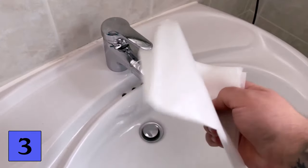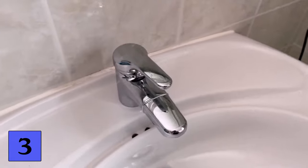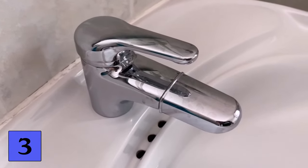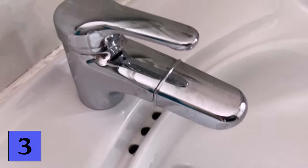This brings us to trick number 3, for which you need an ordinary piece of baking paper. It doesn't matter if it's light or dark. It's a great way to remove limescale stains from your tap.